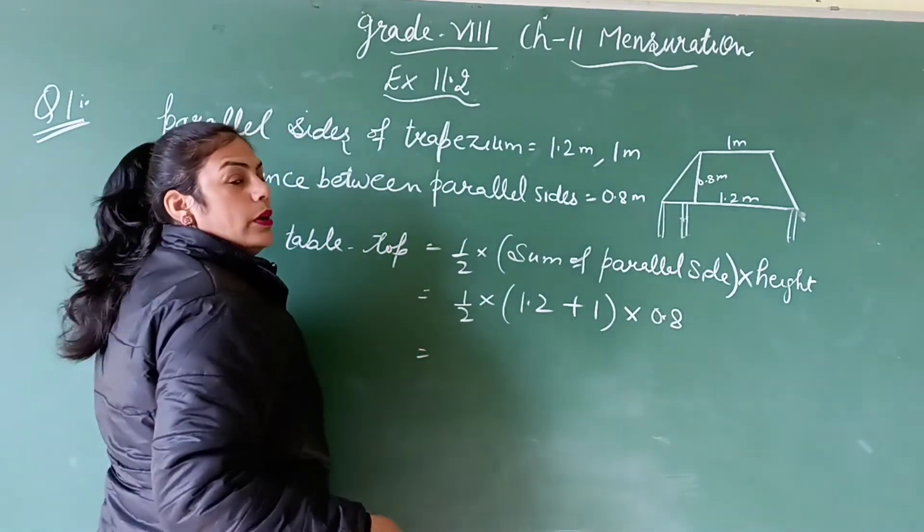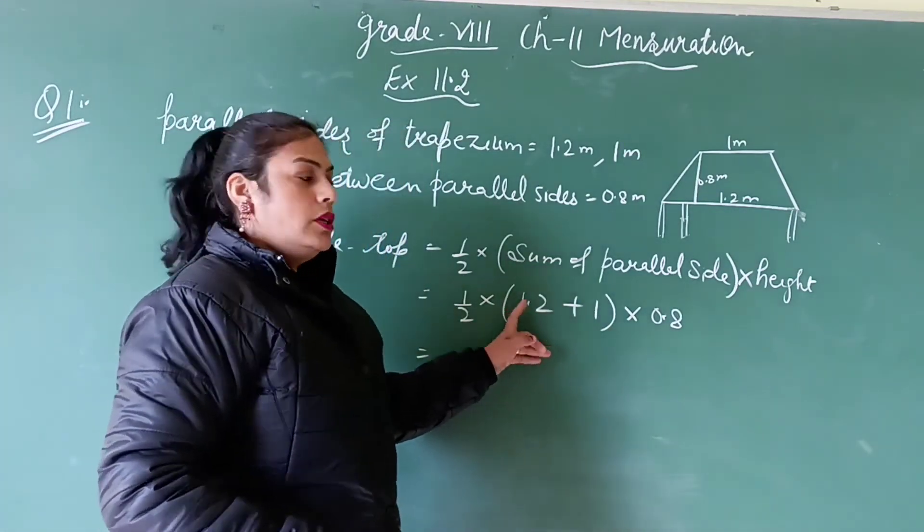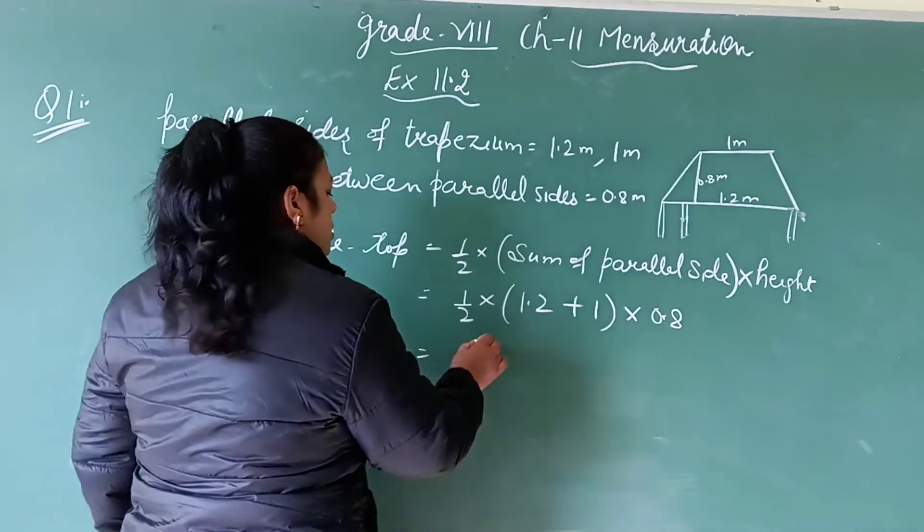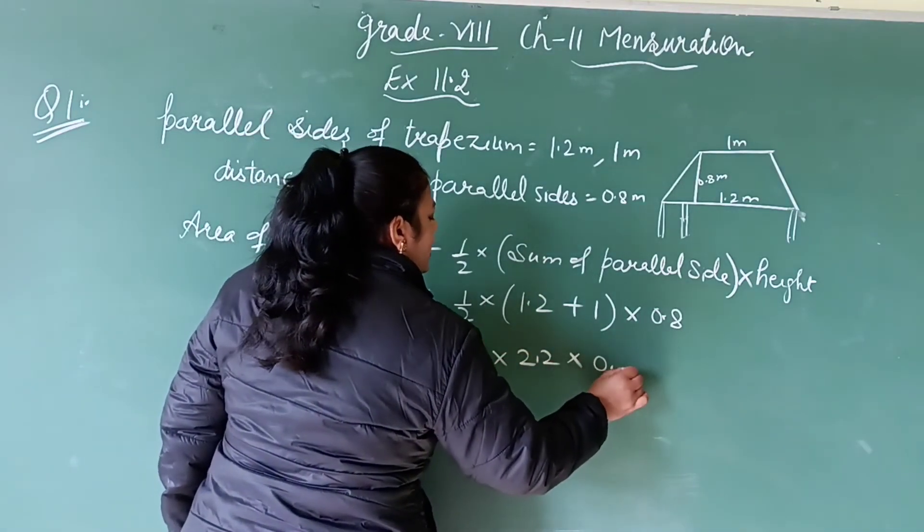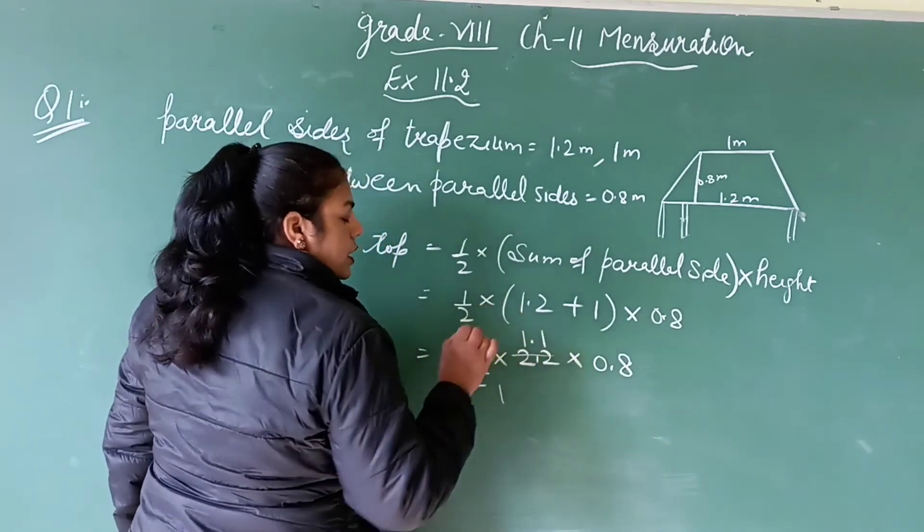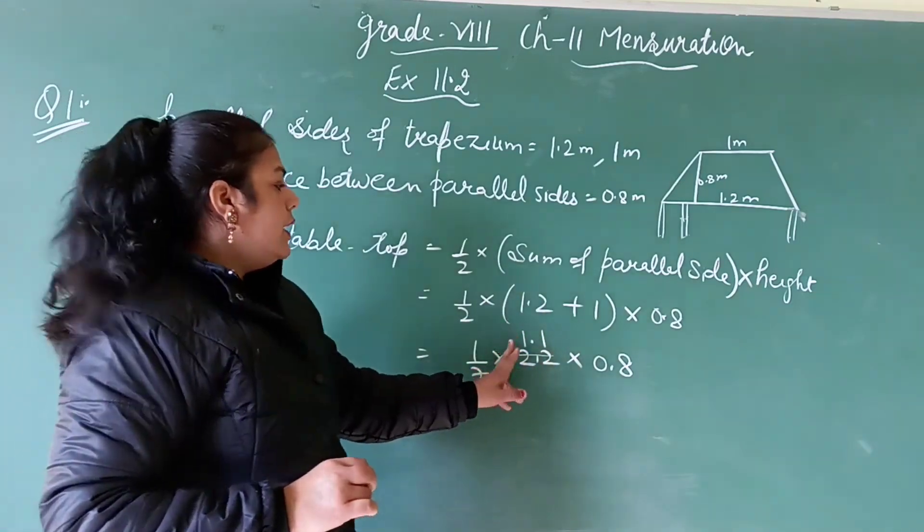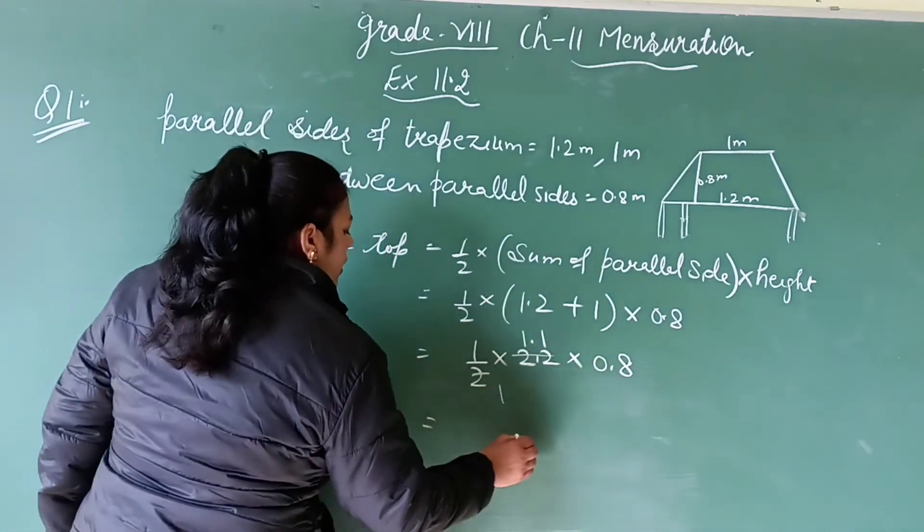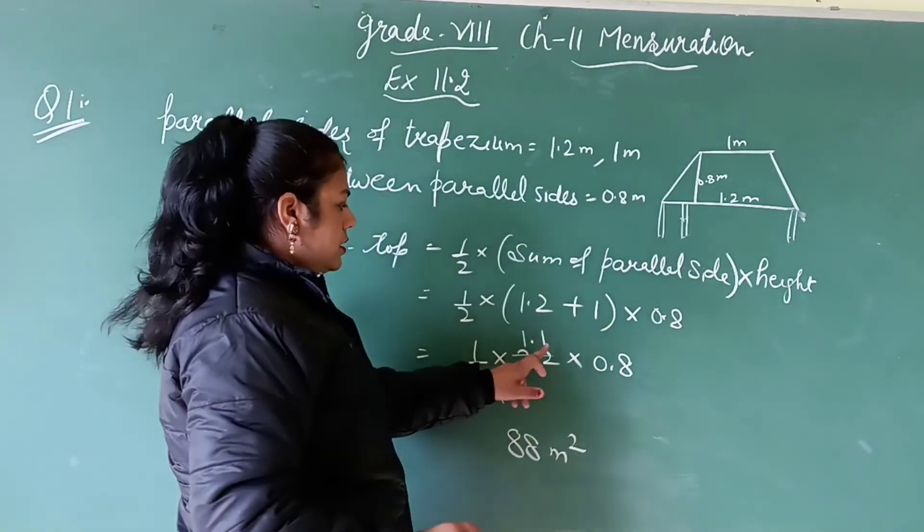Half into its parallel sides are 1.2 and 1, and height is 0.8. So 1.2 plus 1 that becomes 2.2 into 0.8. So decimal by decimal, 11 eights are 88 meter square.